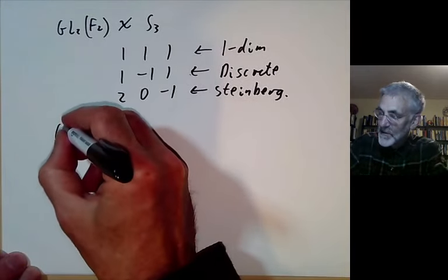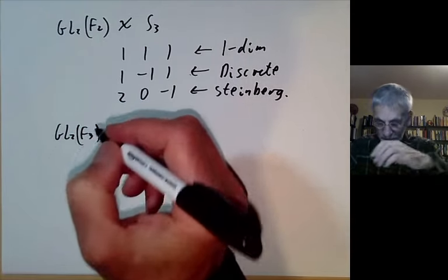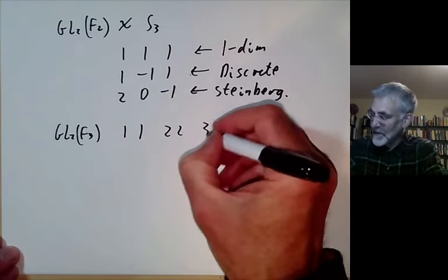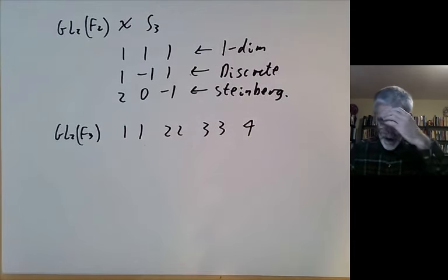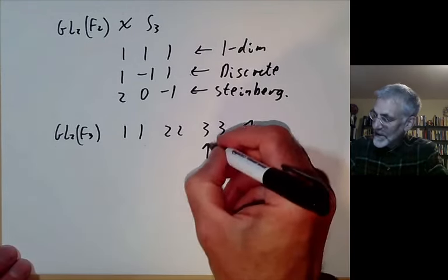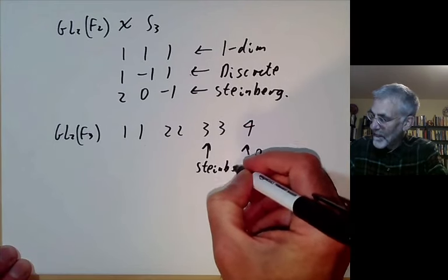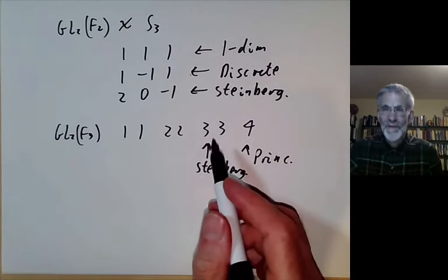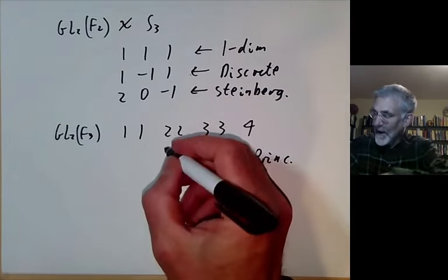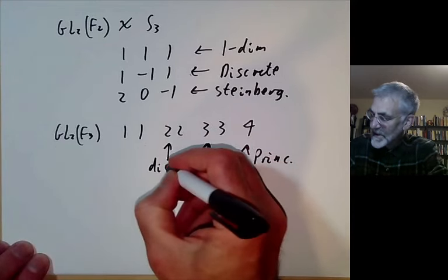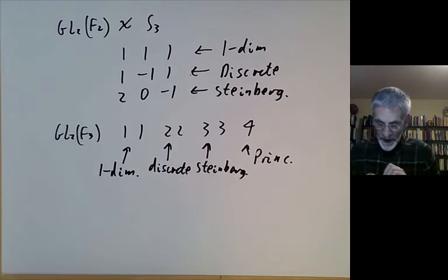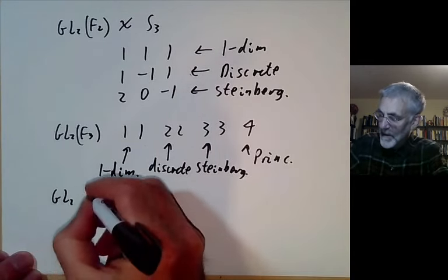For GL2(F₃), the representations have dimensions 1, 1, 2, 2, 3, 3, and 4. The dimension-3 representation is the principal series, the dimension-4 is the Steinberg representation, the dimension-2 representations are the discrete series, and the dimension-1 ones are the one-dimensional representations. Note that for GL2 (which isn't quite simple) you can get more than one Steinberg-type representation.